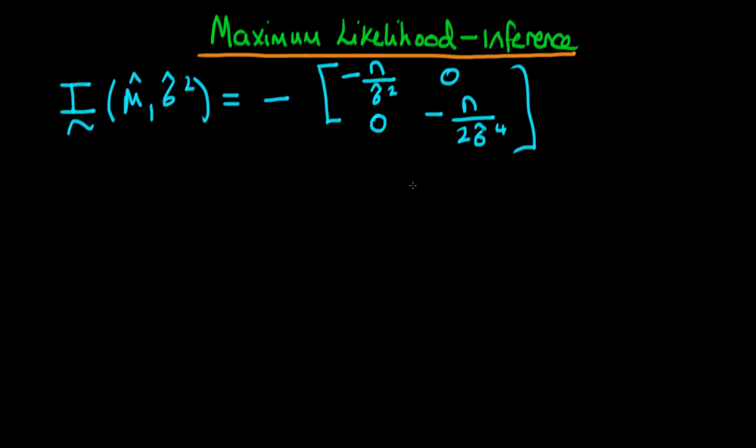That's our estimator for the information matrix and because of the fact that this information matrix is itself diagonal, it's very easy to find the inverse of it. So the inverse of our estimator for the information matrix, we're going to write it like I of mu hat sigma hat squared to the power of minus 1.